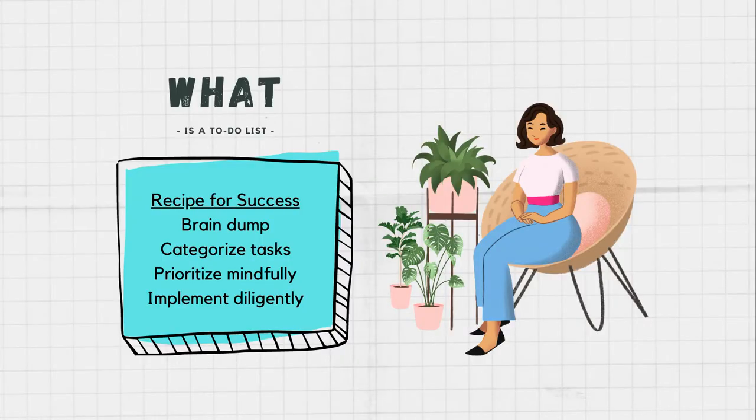So what is a to-do list? It is an external memory device which allows you to dump all of your thoughts into one place and then be able to organize them. A to-do list can be just a big list of items, or it can be a small list of items. We can categorize it, we can prioritize it — there's a lot of different things that you can do with to-do lists.